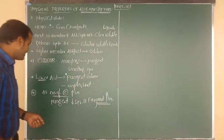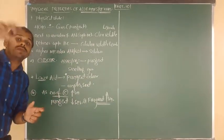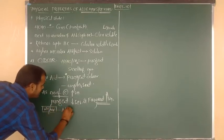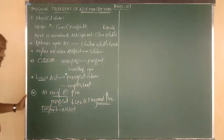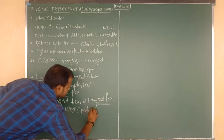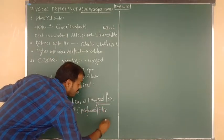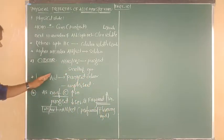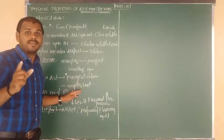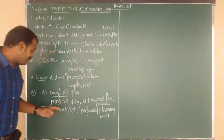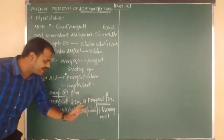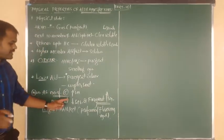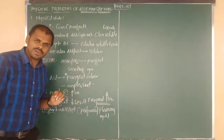That is why higher members of aldehydes and ketones are used in making perfumes and flavoring agents. Lower members, due to their very bad, unpleasant smell, cannot be used in perfumes or flavoring agents. The rule is: as the number of carbons increases, pungent nature decreases and fragrance nature increases.